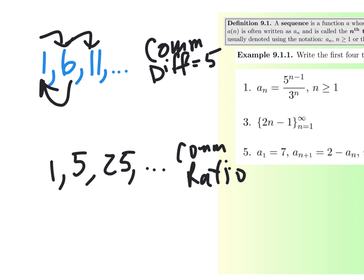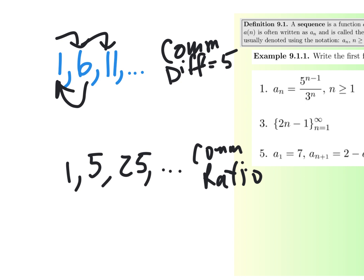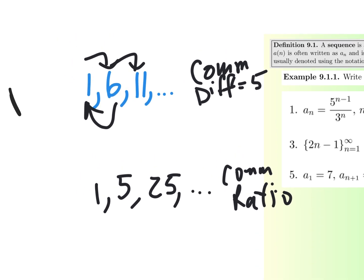The common difference and the common ratio are key here. One of them is when you're going to be adding, and that kind is called arithmetic — spelled like arithmetic but you say it 'arithmetic.' That's an arithmetic sequence, and the other one is a geometric sequence.